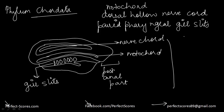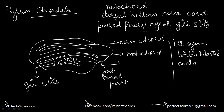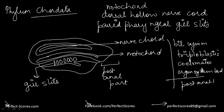All of these organisms have bilateral symmetry. They are triploblastic and they are coelomates with a proper true body cavity. Additionally they have an organ system level of organization, a post-anal tail, and a closed circulatory system.